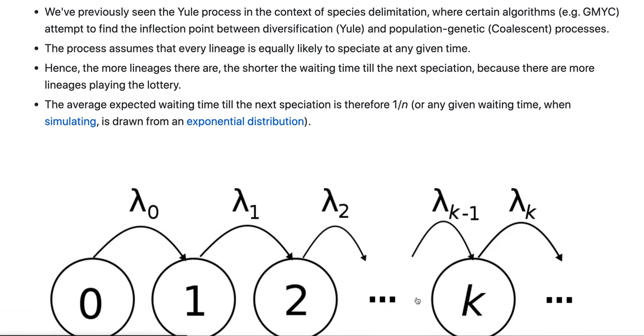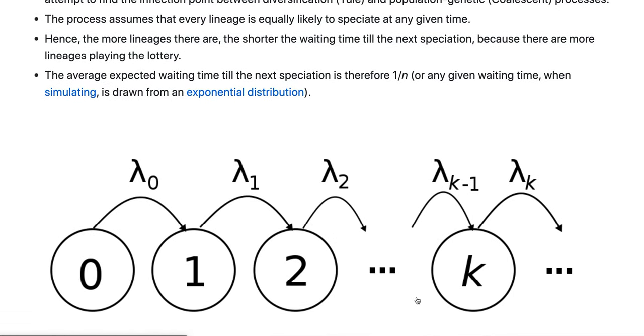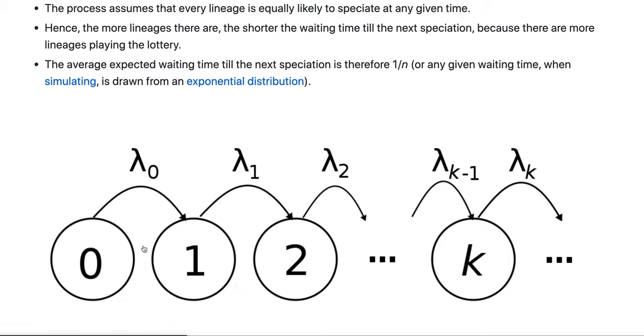So one way to kind of visualize the process is that there is a parameter lambda for the rate, the birth rate, and so the only way is up. We can go from one to two, I guess from zero to one would be a little weird.